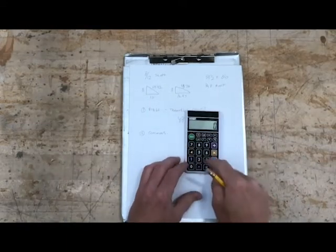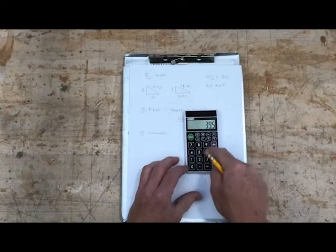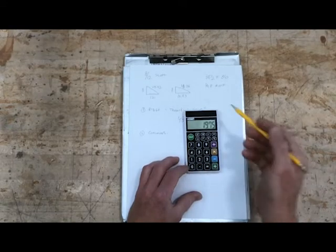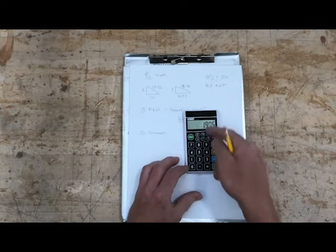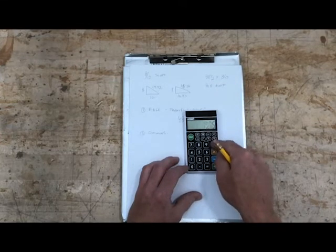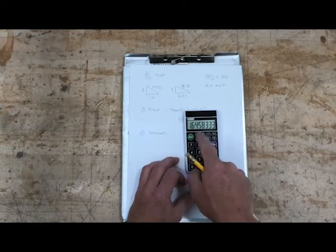I take my calculator again, I go 39.5, and I'm going to divide that by two because my run is half my span, and then I want that in decimal feet to see how many units there are. So I divide by 12, and I got 1.6458.